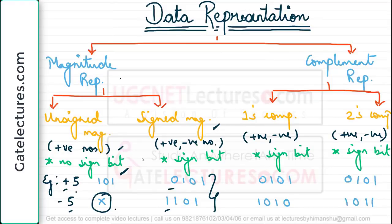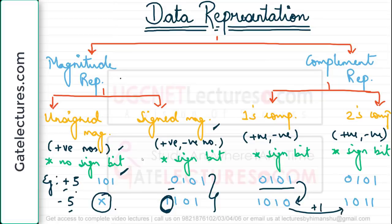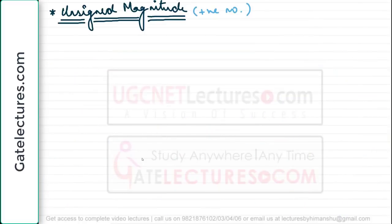In signed magnitude, you put a sign bit — the MSB is known as the sign bit. 1 is for negative numbers, so if you write 1101, the first bit is the sign bit meaning the number is negative, and 101 tells its magnitude. For 1's complement, you complement each bit. For 2's complement, you add 1 to the 1's complement. So these are the four ways of representation of numbers. You may get questions on the ranges of these types of representations.